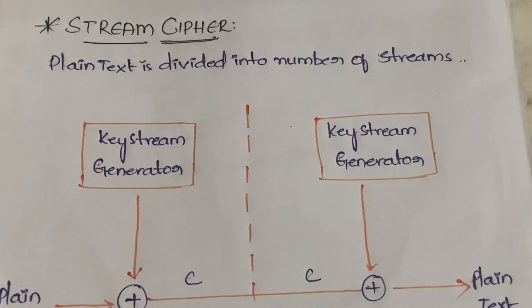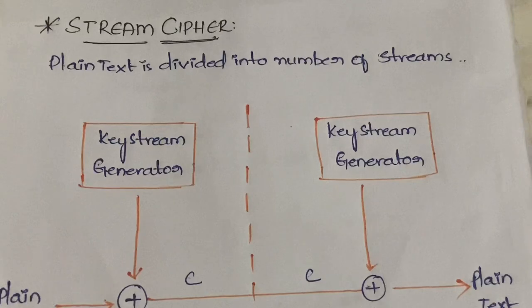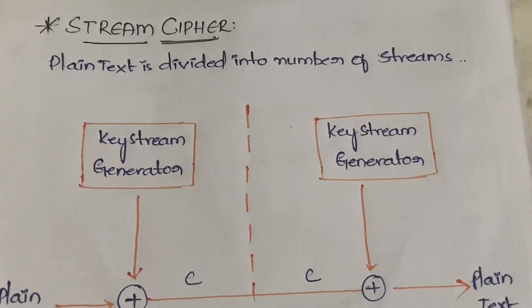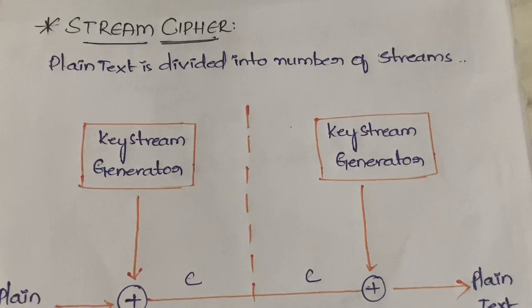From now we are going to learn about stream cipher and stream cipher algorithms. First let me tell you how stream cipher actually works, and then we will learn about the stream cipher algorithms. In the case of block cipher, you divide the plain text into a number of blocks. In the case of streams, instead of blocks, you divide it into a stream.